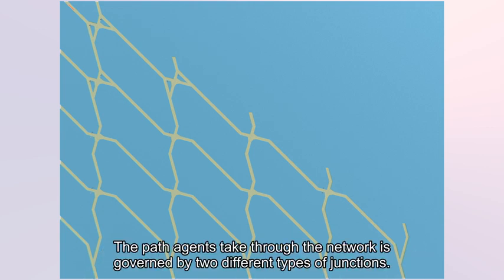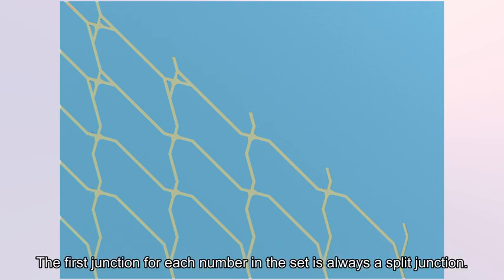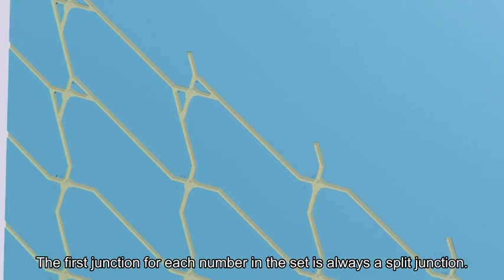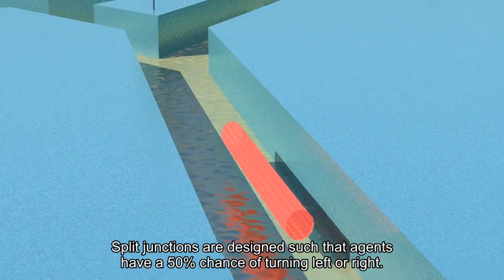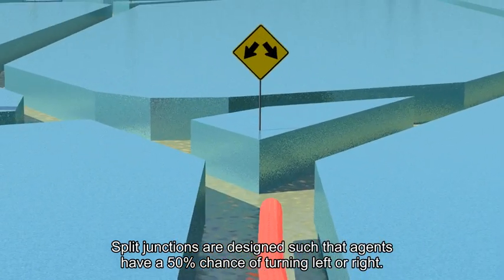The path agents take through the network is governed by two different types of junctions. The first junction for each number in the set is always a split junction. Split junctions are designed such that agents have a 50% chance of turning left or right.